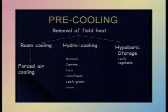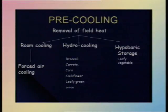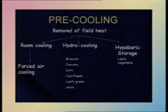Coming to the post-harvest factors — once the fruits and vegetables are harvested, they have a lot of heat entrapped in them. This heat which is present within the fruits and vegetables after they are harvested is known as field heat. This field heat has to be removed, because if it remains entrapped in the commodity, it will severely affect the shelf life. The process by which we remove this field heat is known as pre-cooling, and this is a very important post-harvest factor.